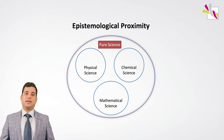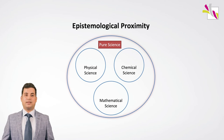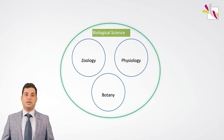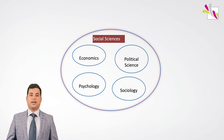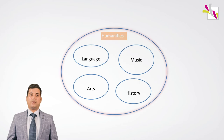Based on epistemological proximity, disciplines are often grouped in knowledge creation. Within natural science, a combination of physical, chemical and mathematical sciences is referred to as pure science, while combining chemistry, zoology, physiology and botany is regarded as biological science. Likewise, economics, psychology, political science and sociology are clustered under social sciences, while languages, arts, music and history are clustered under humanities. Therefore, some disciplines are closer together in knowledge subsystems and others are far away from each other.